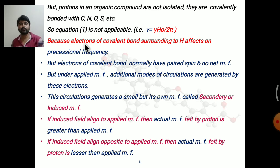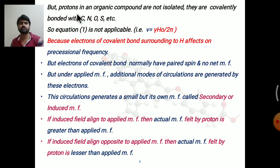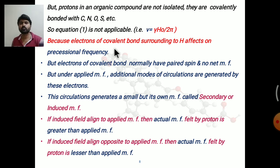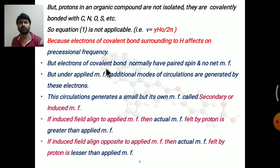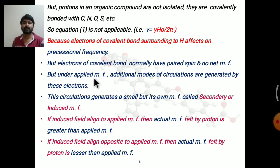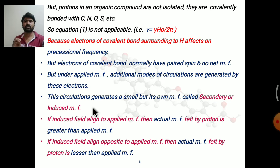However, the equation ν = γH₀ / 2π derived for an isolated proton is not applicable within a molecule, because in a molecule protons are covalently bonded with carbon, nitrogen, oxygen, or other atoms. The electrons of the covalent bond surround the proton and affect its precessional frequency. Although paired electrons of the covalent bond normally cancel each other's magnetic field, when an external magnetic field is applied to the molecule, additional modes of circulation are generated by these electrons, which generate a small but distinct secondary or induced magnetic field.